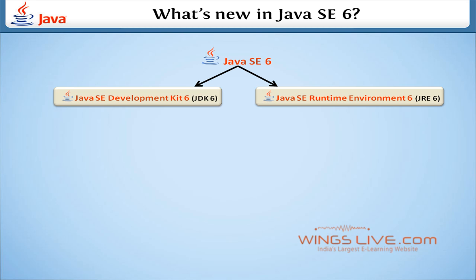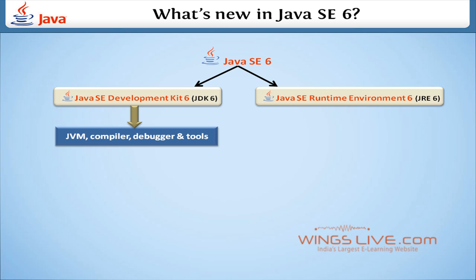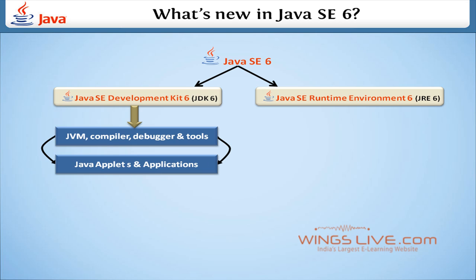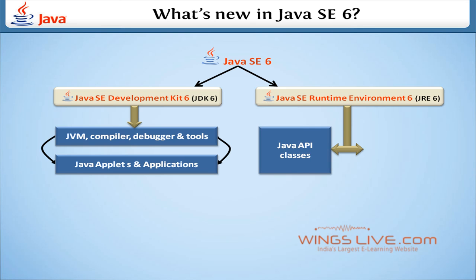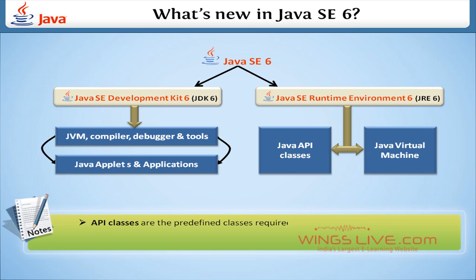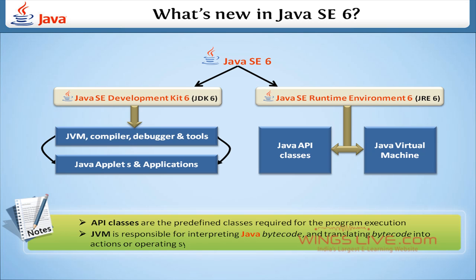The JDK includes the JVM compiler, debugger, and other tools for developing Java applets and applications. The JRE contains two parts: Java API classes and Java Virtual Machine. API classes are the predefined classes required for program execution, and JVM is responsible for interpreting Java bytecode and translating bytecode into actions or operating system formats.